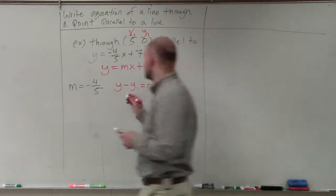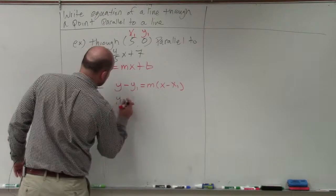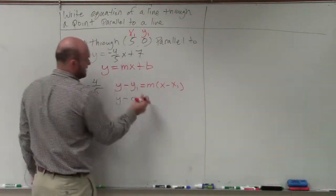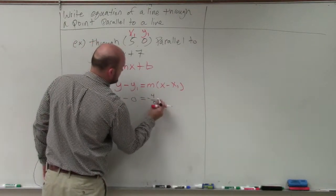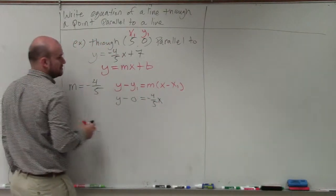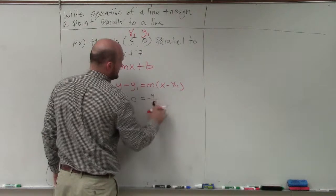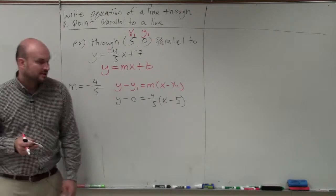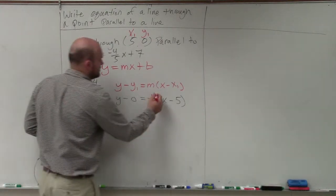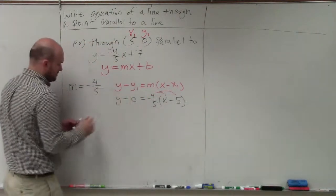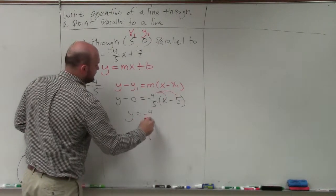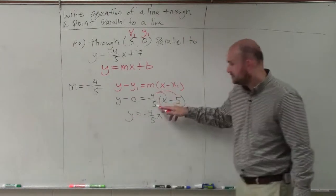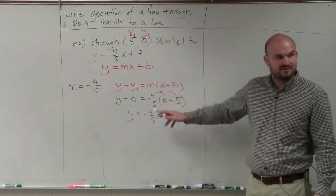When I do this, I have y - 0 = -4/5(x - 5). Then we simplify using the distributive property, and I get y = -4/5x... When you multiply here, the fives divide out to 1.